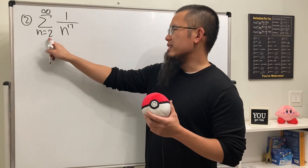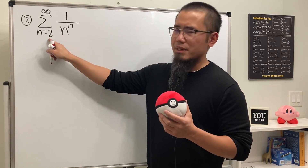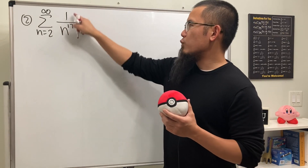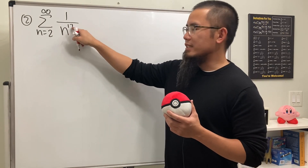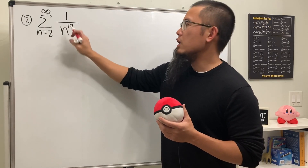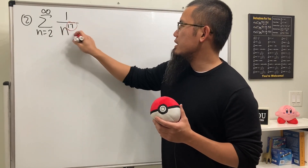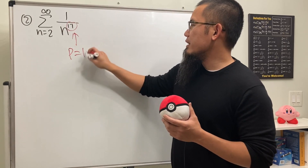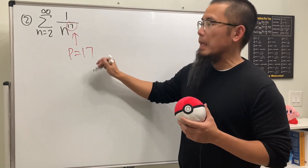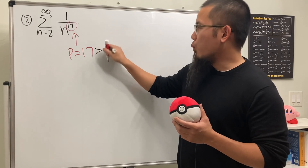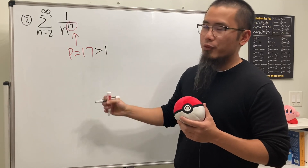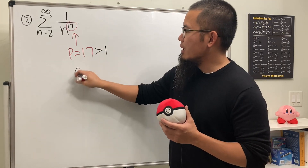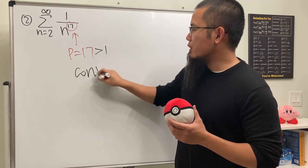For the second one, we have the series of one over n to the 17th power. As we can see, p here is 17, which is bigger than one, and therefore this series converges.